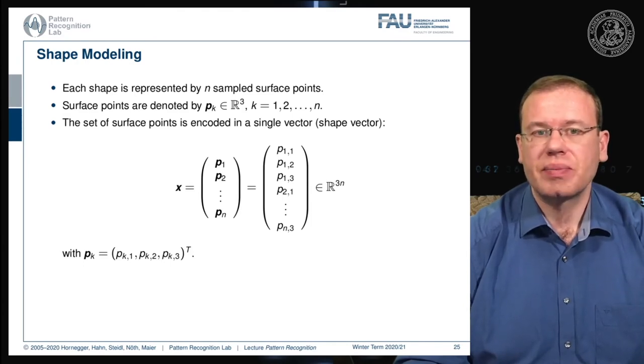We write this up as a high-dimensional vector that contains all of the elements of the 3D points. This is then living in a space that has the dimension of 3 times n, where n is the number of points. This is really a very high-dimensional space.